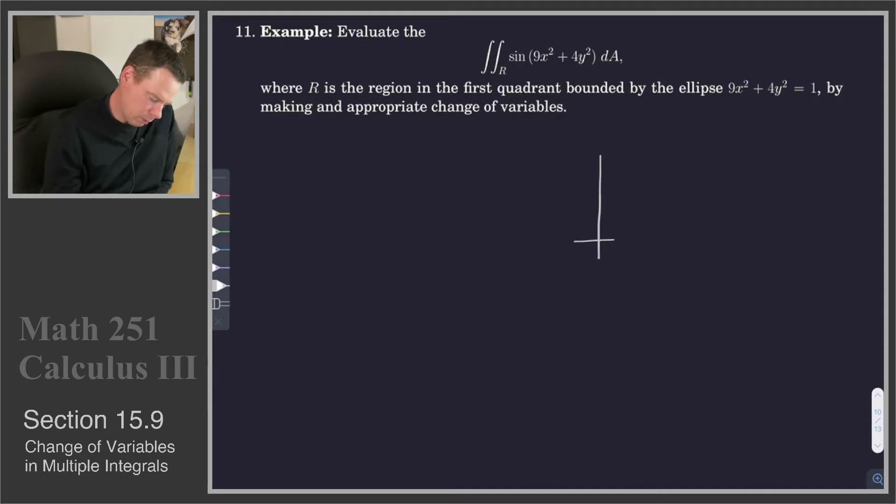So we've got an ellipse. When y equals 0, x has got to be a third, so x is a third passing through that point. And when x equals 0, y has got to be a half to satisfy it, so it'll be somewhere up here at a half. And so our ellipse looks something like this. That's what we're interested in, integrating over that region. So that's 9x² + 4y² = 1.